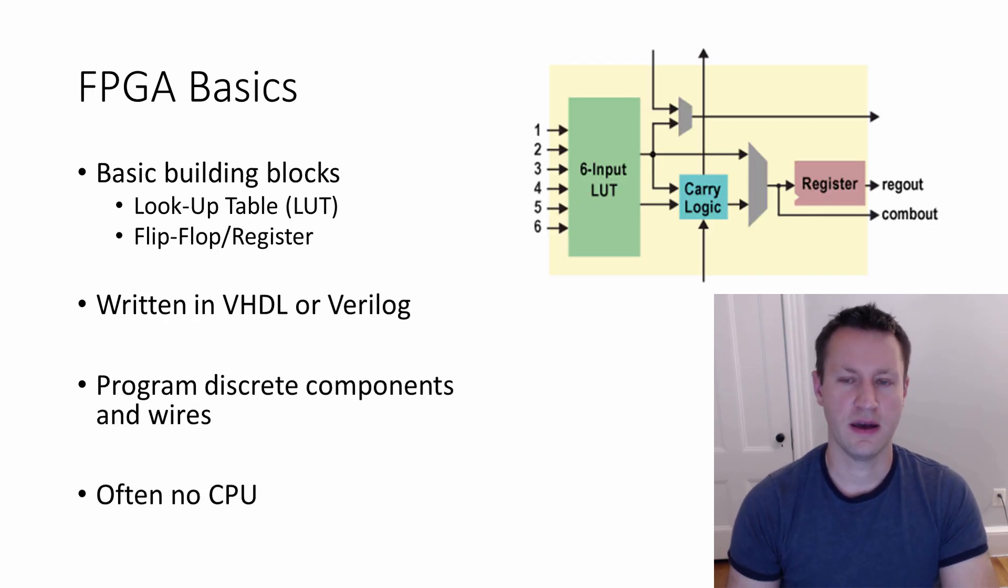So first of all, FPGAs. They're built up of basic building blocks. There's a lookup table and a flip-flop or register. Those are your two workhorses inside an FPGA. You can create your VHDL or Verilog code to instantiate them and make them do different things. Really you're programming at the discrete component level. You're literally wiring things up, creating wires between components.